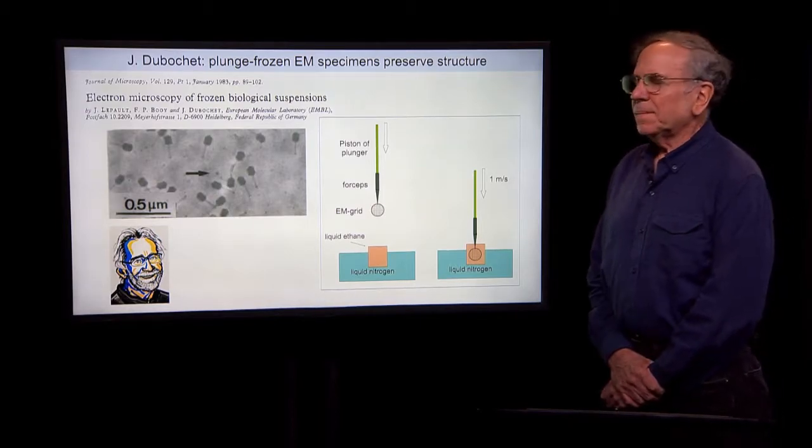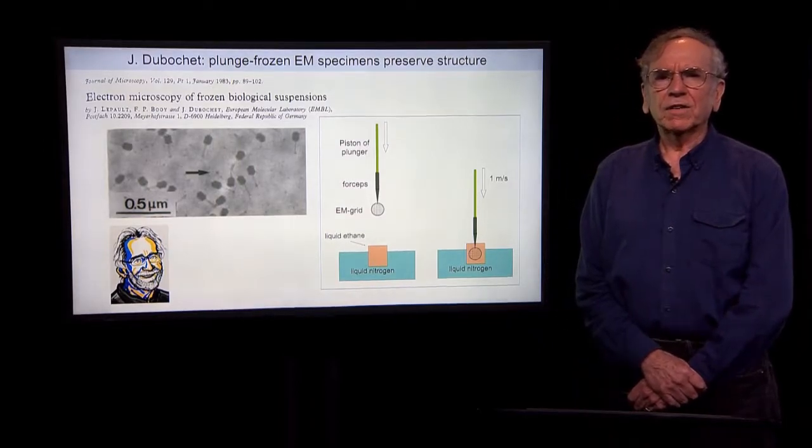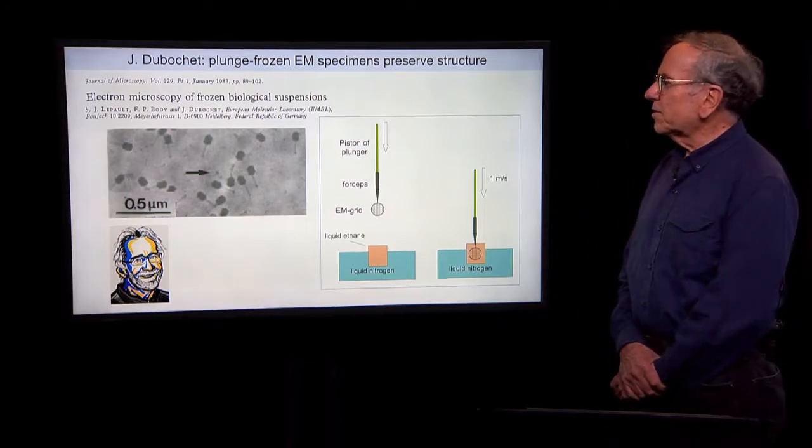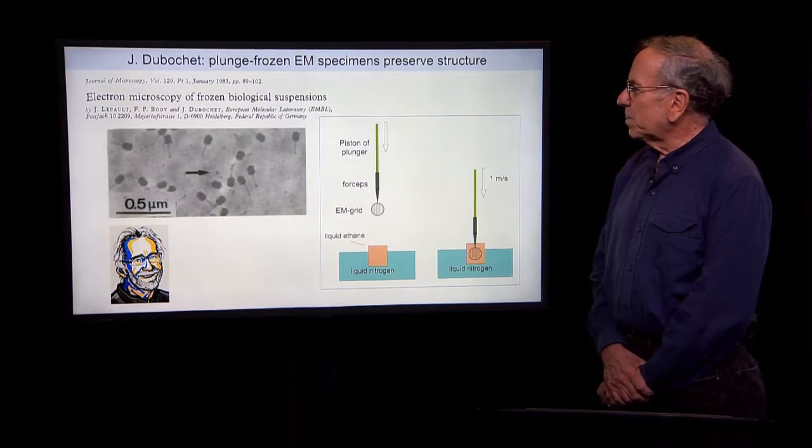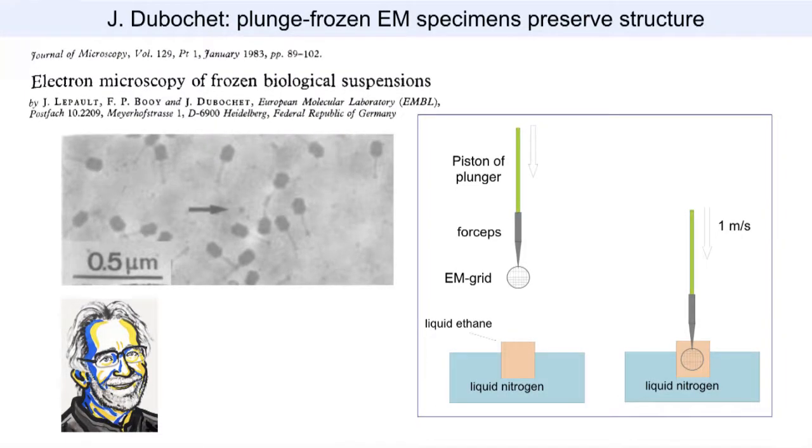discovered that it's possible to rapidly freeze biological specimens on an electron microscope grid and still preserve biological structures. For example, these bacteriophage virus particles. And the idea is to freeze your aqueous solution surrounding your biological particles very rapidly in a very good cryogen liquid ethane, and this rapid freezing rate prevents water from forming ice crystals.